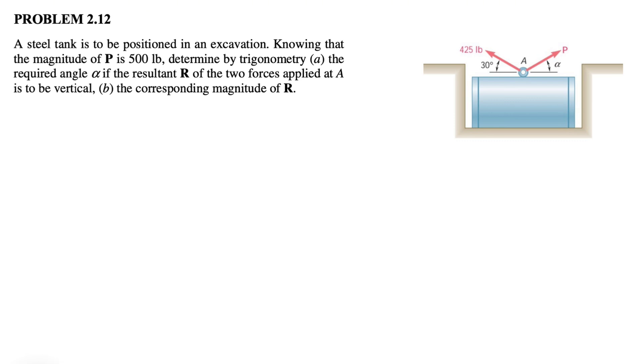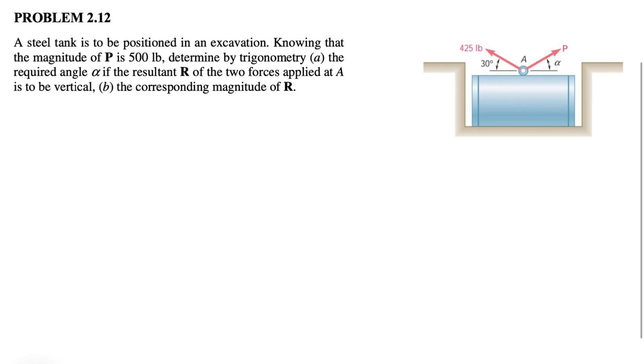We have a steel tank that is to be positioned in an excavation. We know that the magnitude of the force P is 500 pounds, and we need to determine by trigonometry the required angle alpha in order to have the resultant of these two forces to be vertical.